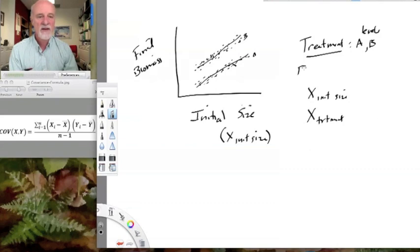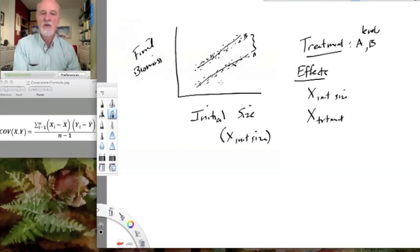And what we can actually do is construct a model in which we have a covariate, initial size, and a nominal variable, treatment. So our effects in our model are initial size and treatment. So what does treatment effect tell us? That tells us whether the elevation of these two regression lines is different. And so our treatment effect is being measured as the difference between these two.